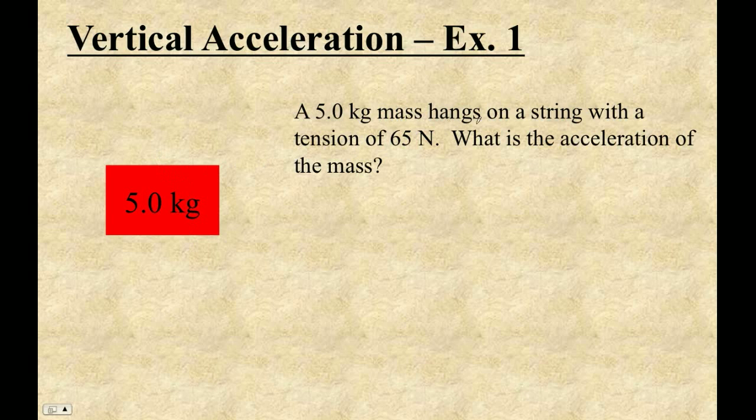There's a force that's hanging on a string with a tension of 65 newtons. Well tension is just force in a string and if it's hanging on the string then that means the string is exerting an upward force of 65 newtons. So positive 65 newtons. Obviously I'm making the direction up positive.